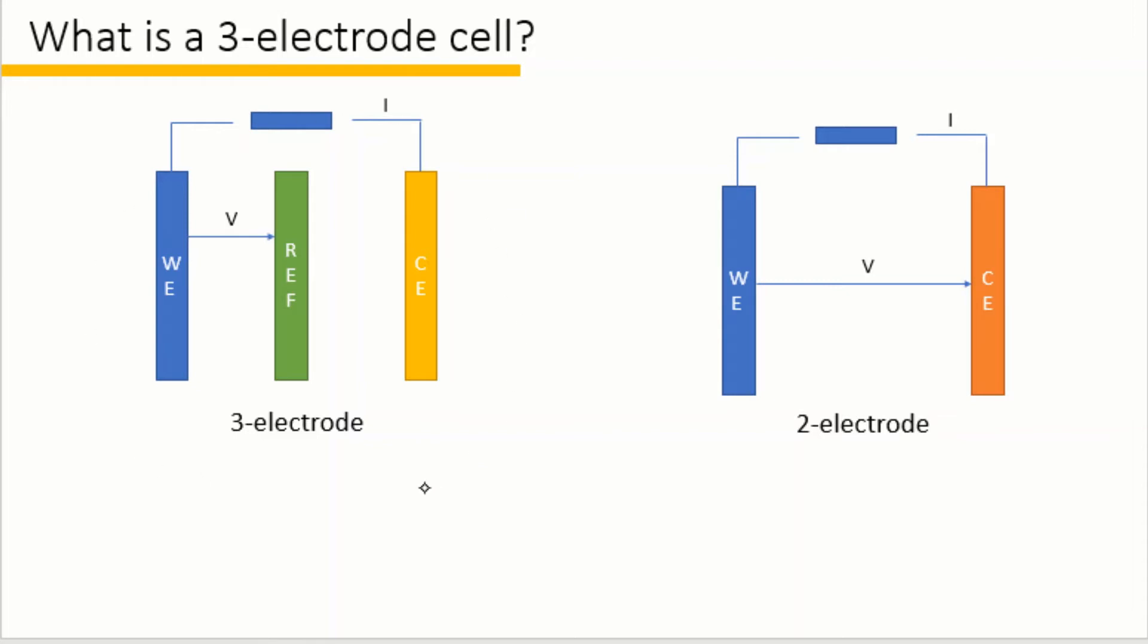In the same cell, the current is the same for the working and counter, as the potential of the reference electrode is always constant. So the potential, V, here is always the potential of the working electrode versus the reference electrode. When we are operating a three-electrode cell, we can monitor the potential and the current of only the working electrode, or this single electrode.